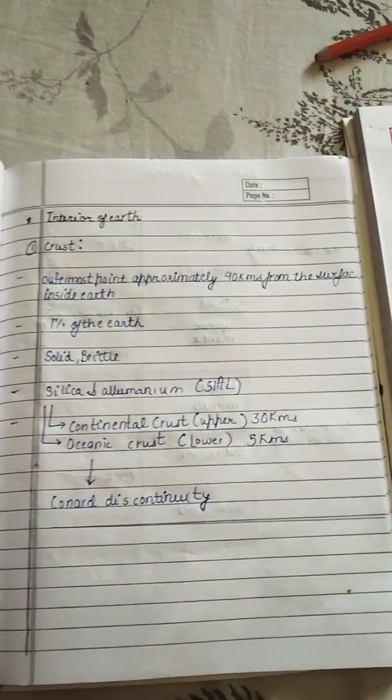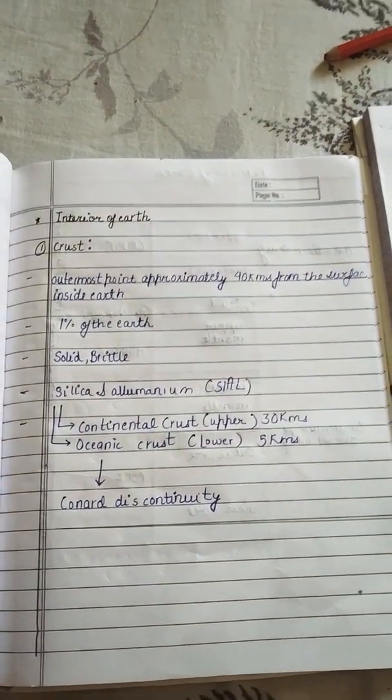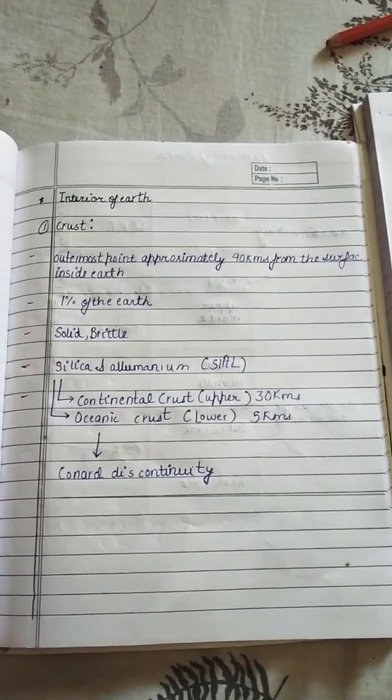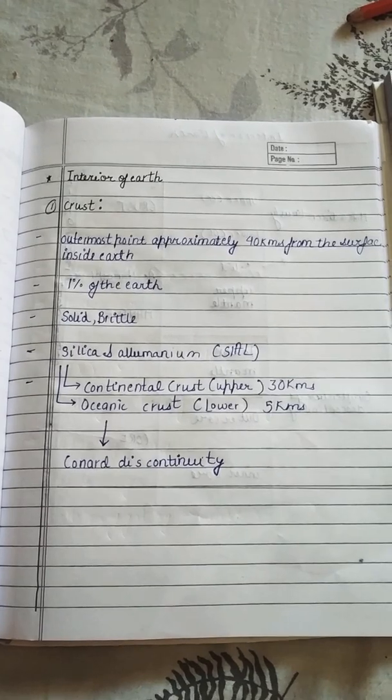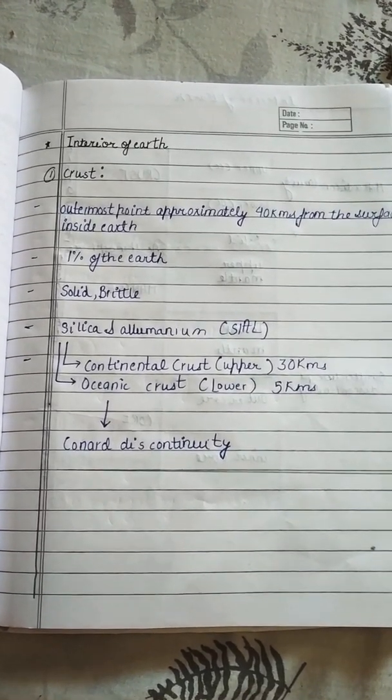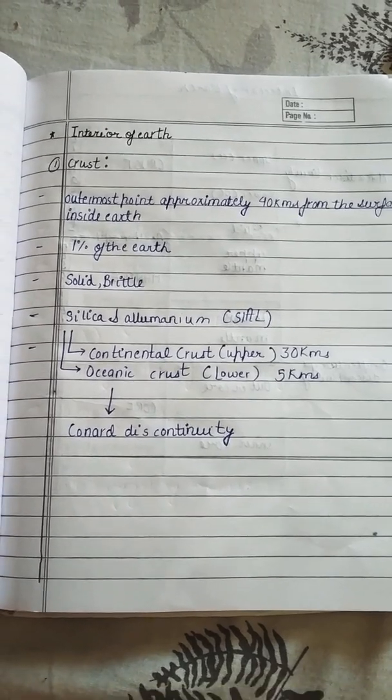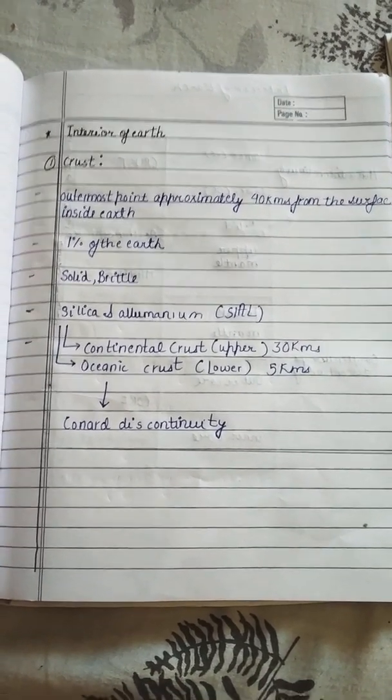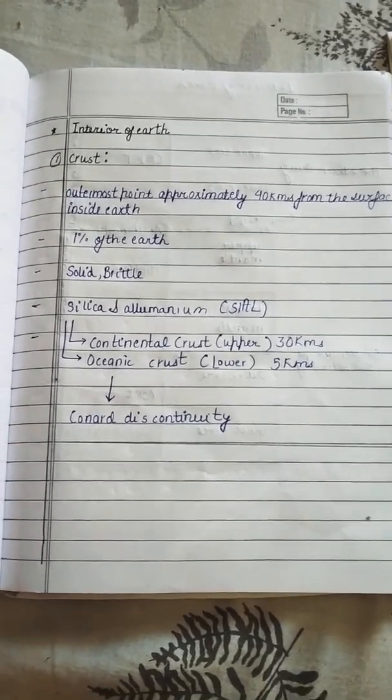Interior of the Earth. Crust: Outermost layer, found approximately 40 kilometers from the surface inside Earth. 1% of the Earth, solid brittle, made of silica and aluminium. Continental crust is the upper 30 kilometers. Oceanic crust is the lower 5 kilometers. Mohorovicic discontinuity.